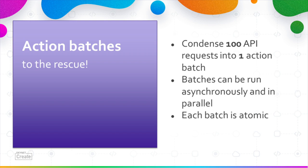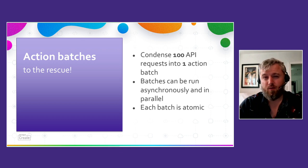If only there were a way to batch all of these changes. Enter action batches. Action batches are a Meraki dashboard API feature that you can use to condense up to 100 API requests into a single batch. Different batches can be run in parallel, and they can also be run as background jobs, which we call asynchronously. Each action batch is atomic, meaning that the whole batch either succeeds or fails — there's no in-between. That's good because it means you can sleep easy if one succeeds. And if it fails, despite the code we write, we're all human, and it is easier to clean up mistakes when they're discreet and predictable.